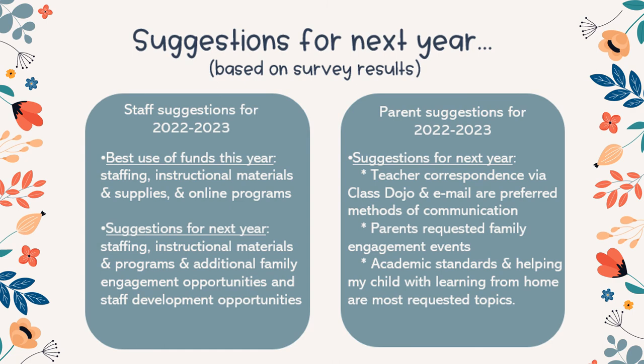Some suggestions for next year from staff and parents are as follows. Staff felt the best use of funds this year were staffing, instructional materials and supplies, and technology. Their suggestions for next year include additional staffing, replacement technology, instructional materials and programs, and additional family engagement opportunities. Parent feedback indicated that teacher correspondence via ClassDojo and email are preferred communication methods. Parents also requested family engagement events, with academic standards and helping their child learn from home as the most requested topics.